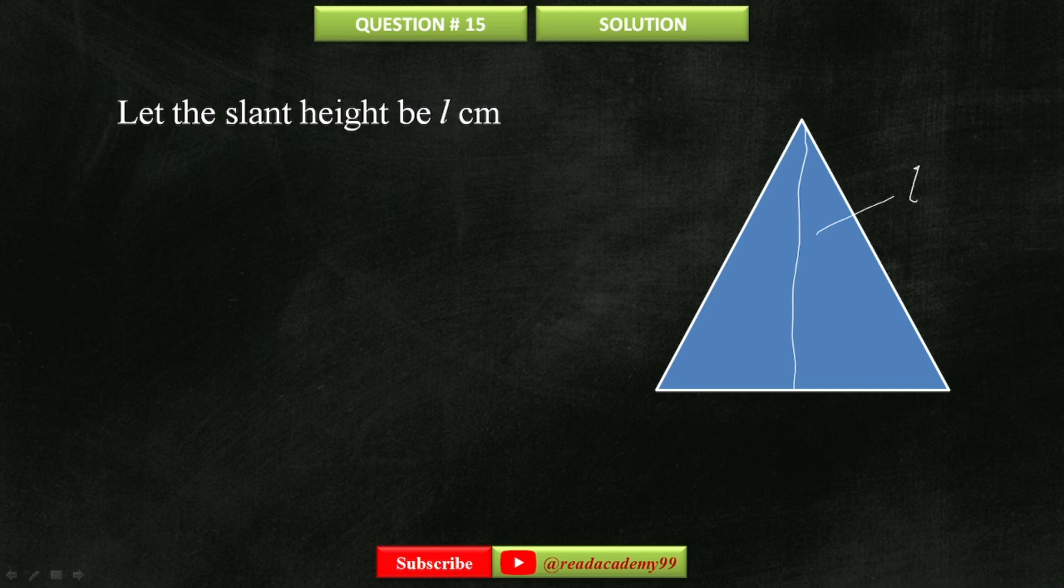As you can see, a triangle is formed on either side. Let's take this triangle on the left side. This side is the hypotenuse of the triangle. This side is the base, and this side is the height.